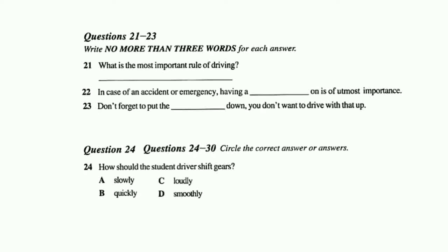Remember, the most important rule of driving: safety first. There are some steps to follow. First, you should put on your seatbelt — you should always remember to do that. In case of an accident or emergency, having a seatbelt on is of utmost importance. Okay, I have my seatbelt on. Now what should I do? Start the car.